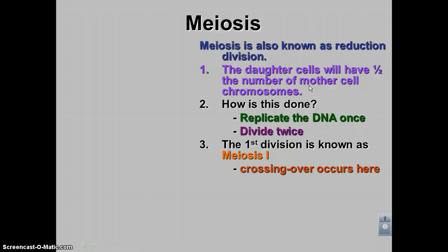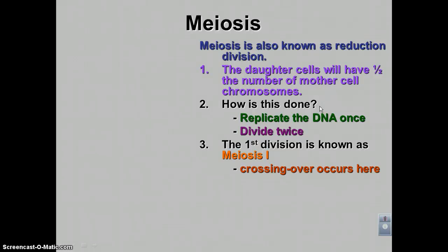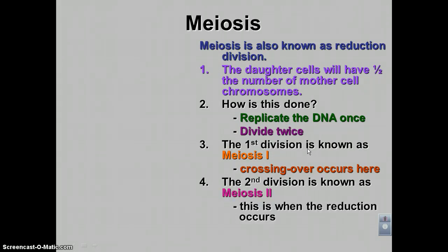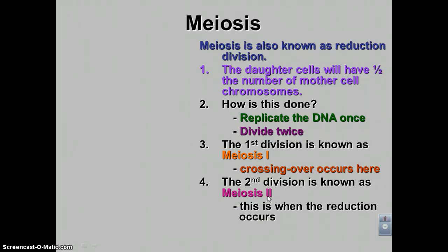The first division is called meiosis number one, and this is where a very special process called crossing over starts. Crossing over is a process in which genetic variety is increased — we'll talk about that in more detail coming up. The second division is known as meiosis number two, and this is where the reduction occurs.